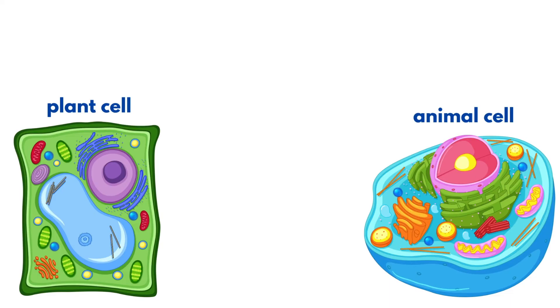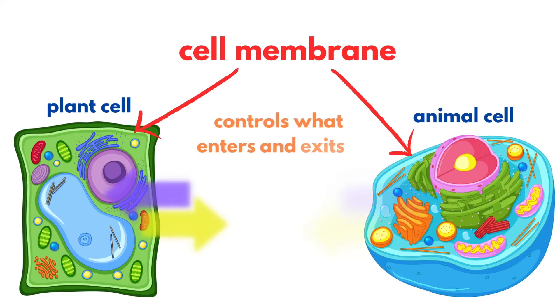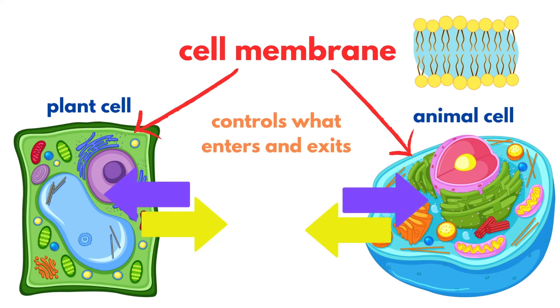Now, let's talk about the cell membrane, the protective barrier that surrounds both plant and animal cells. It's flexible and controls what enters and exits the cell, maintaining the cell's internal environment.